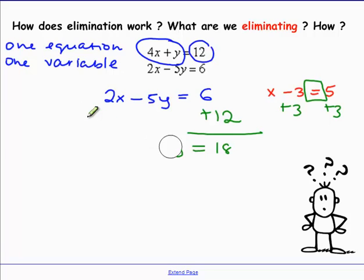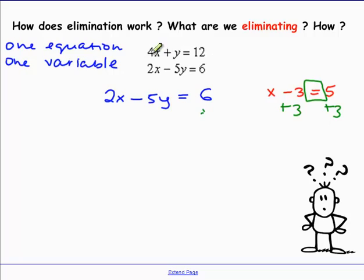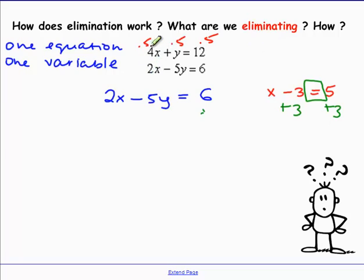We still want to add the two equations, but if we just add them as-is, we'll still have 6x's and negative 4y's — both variables remain. But if we had 5y on the top, then the y's would actually eliminate. To get from y to 5y, we multiply everything by 5, giving us 20x plus 5y equals 60.